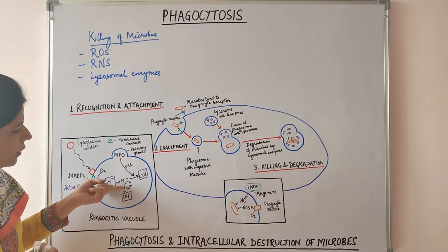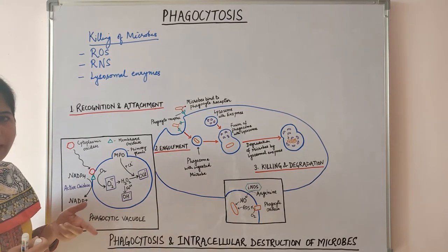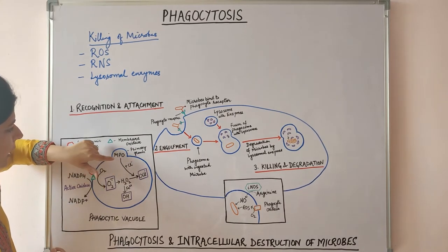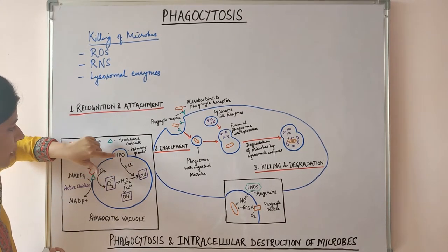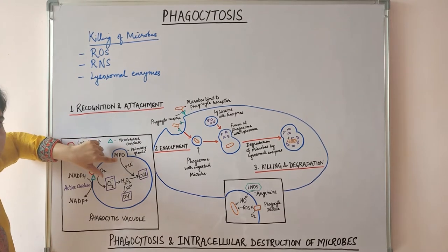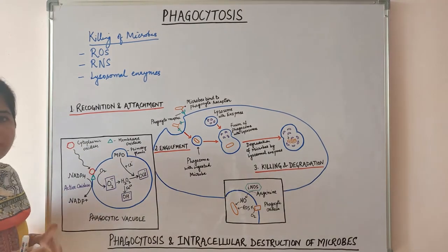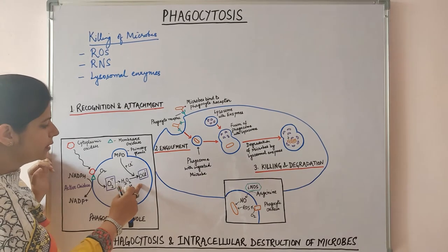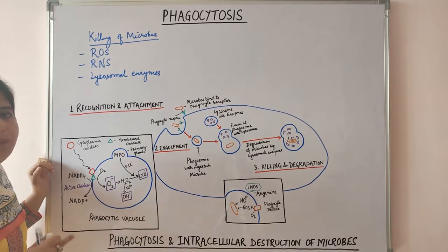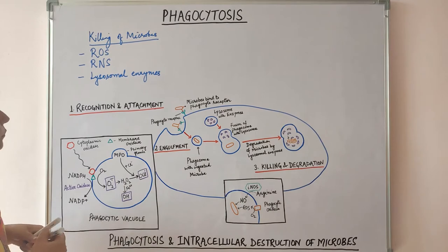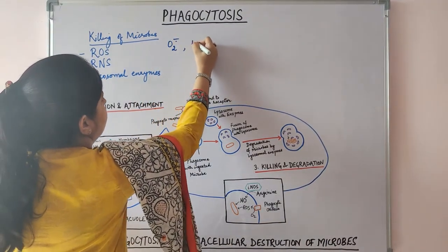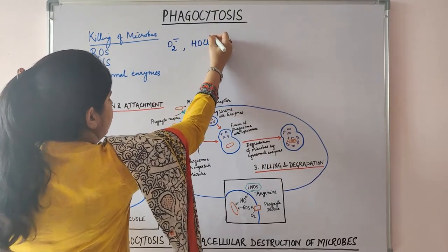Hydrogen peroxide itself is not a potent antimicrobial agent. However, the primary granule contains myeloperoxidase. Myeloperoxidase acts on hydrogen peroxide in the presence of halide (chloride) to form a potent antimicrobial agent — hypochlorite. So superoxide anion and hypochlorite are both generated in this process.